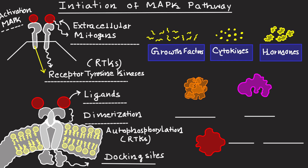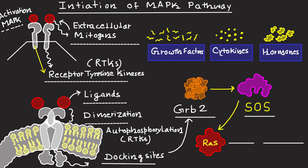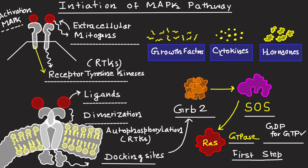After dimerization and autophosphorylation, the RTKs create docking sites for adaptor proteins like GRB2, which is known as Growth Factor Receptor Bound Protein 2. This process further recruits SOS, known as Son of Sevenless. SOS then activates RAS, which is a small GTPase protein. RAS facilitates the exchange of GDP for GTP, marking the first step of signal transduction and the beginning of the MAP Kinase Signaling Pathway.